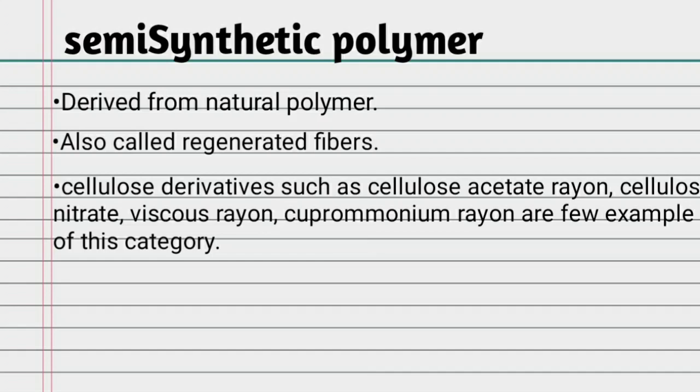Examples of semi-synthetic polymers include cellulose acetate rayon, cellulose nitrate, viscose rayon, and cuprammonium rayon.